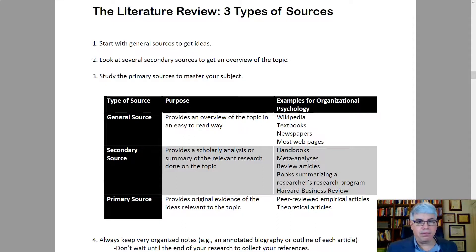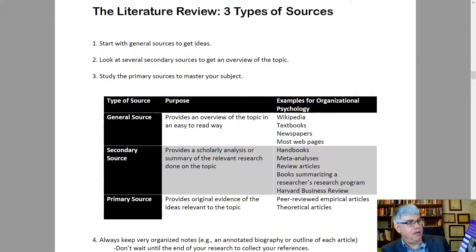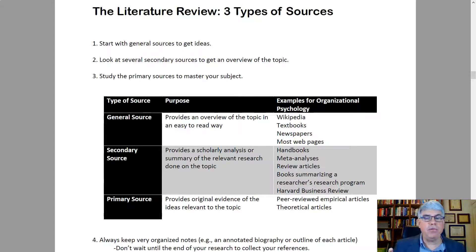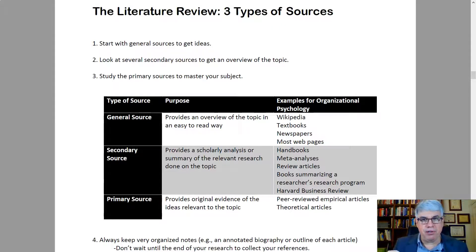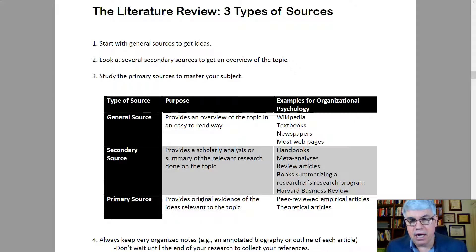Secondary sources provide a scholarly analysis or a summary of relevant research done on a topic. In fields like social psychology and organizational psychology, there are books called handbooks — for example, the Handbook of Principles of Organizational Behavior. Handbooks are high-quality summaries where each chapter reviews some major topic, covering everything we know about it. So handbooks are a really good secondary source providing an overview of a topic.